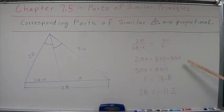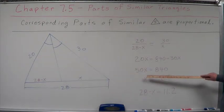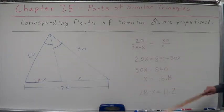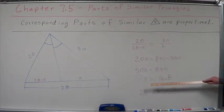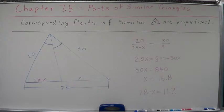And combine like terms. We're going to add 30x to both sides. We end up with 50x equals 840. Do the division. Divide 840 by 50 and we get x equals 16.8.